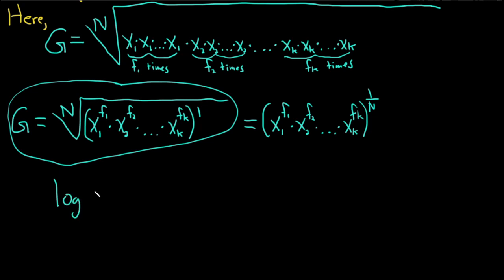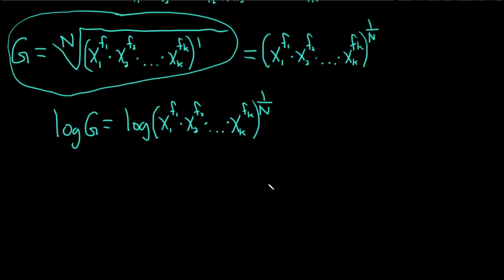Let's take the log of both sides now. So log G is equal to the log of x1 to the f1 times x2 to the f2 times dot dot dot times xk to the fk, and this here is to the 1 over N. Now we can use properties of logs to bring this down and put it in the front.